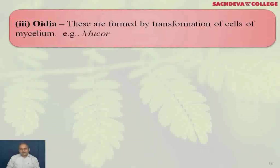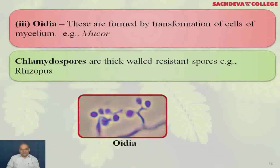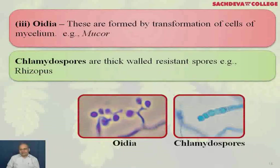Oidia are formed by transformation of cells of the mycelium (example: Mucor). Chlamydospores are thick-walled resistant spores (example: Rhizopus). These are the oidia, and this is the chlamydospore in Rhizopus. They are formed under unfavorable conditions.